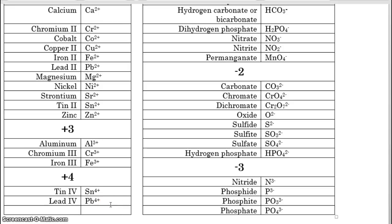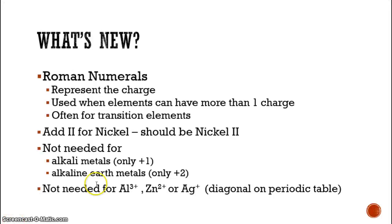We also looked at lead, which is a two plus up here and then a four plus down here. So ions that can have more than one charge need a Roman numeral, or at least I should say cations, need a Roman numeral to tell us what the charge is. So what's new? These Roman numerals. We know the elements, we know their symbols, but we have to have Roman numerals for elements that can have more than one charge. And the Roman numerals represent the charge that they have, so that makes it easy. And they're used when elements can have more than one charge, and often used for transition elements, transition metal elements.